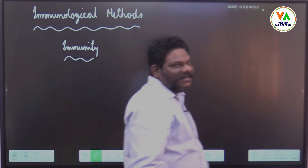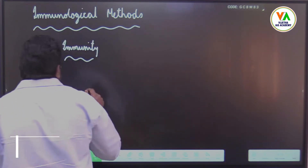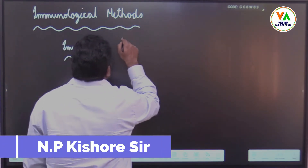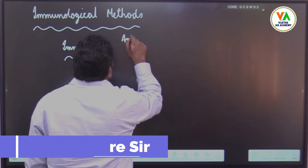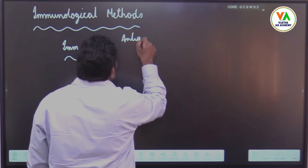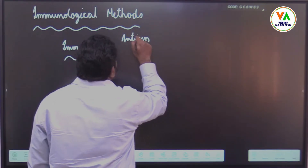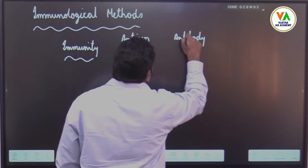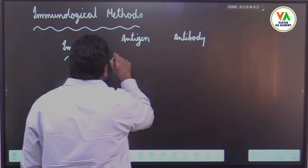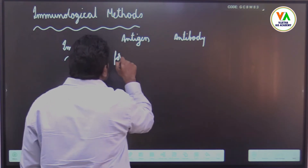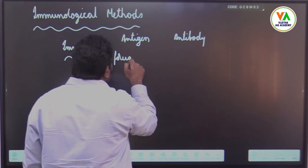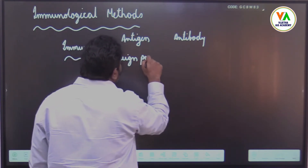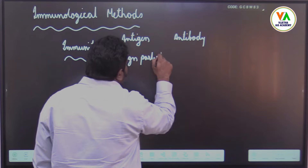What is immunity? Immunity is the interaction between antigen and antibody. Antigen is any foreign particle in the body.